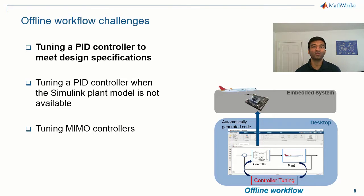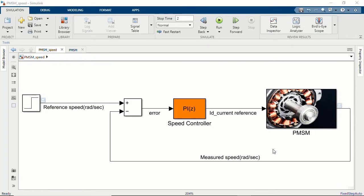Let's start with the offline control design workflow challenges. We'll take the first one: tuning a PID controller for a Simulink model so that it meets our design specifications. Let's move over to Simulink, where I have a model of a permanent magnet synchronous motor. What I'm trying to do is design a speed controller — a PI controller — that can bring about good reference tracking of the speed commands provided. This PMSM motor is popularly used in HVAC or machining tools.